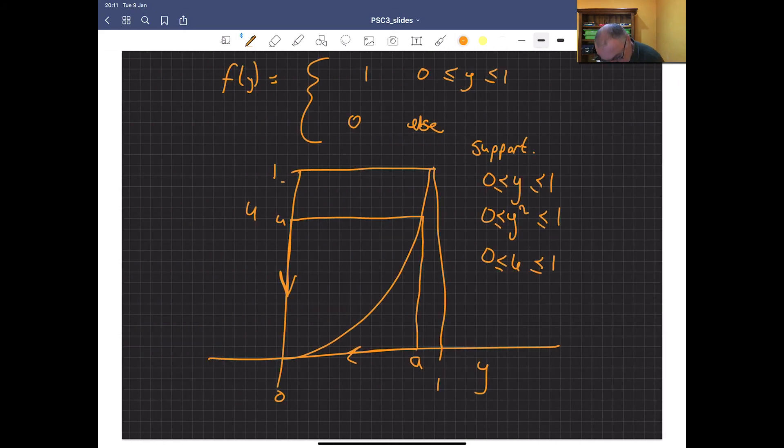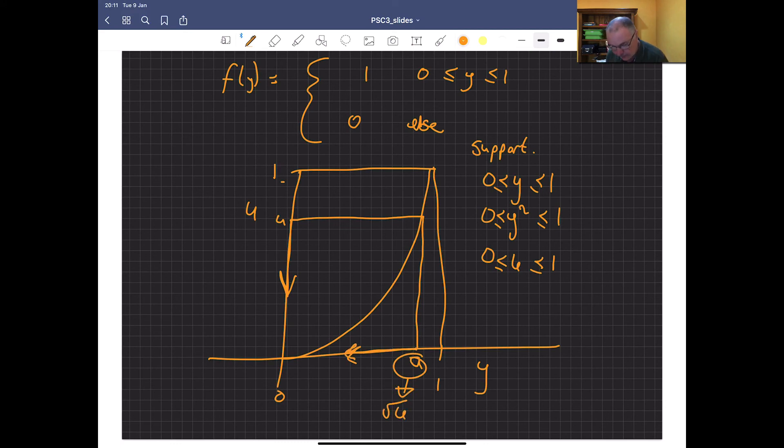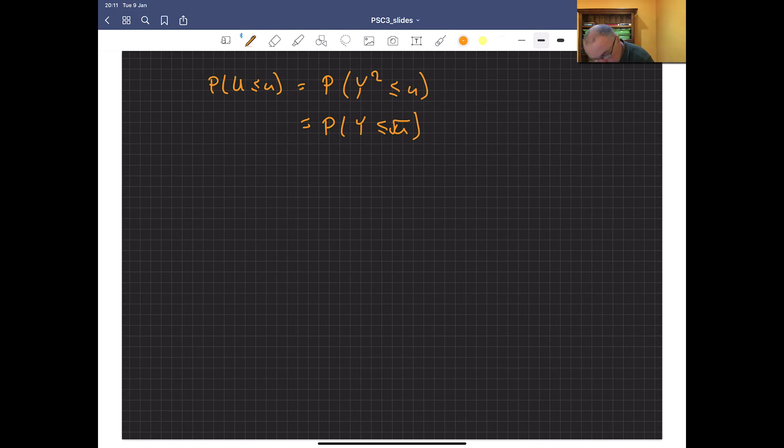So we want the probability that U is less than or equal to u, which is the probability that Y squared is less than or equal to u, which is the probability that Y is less than or equal to the square root of u. So to remind you, this is the square root of u, and we want the area less than that.